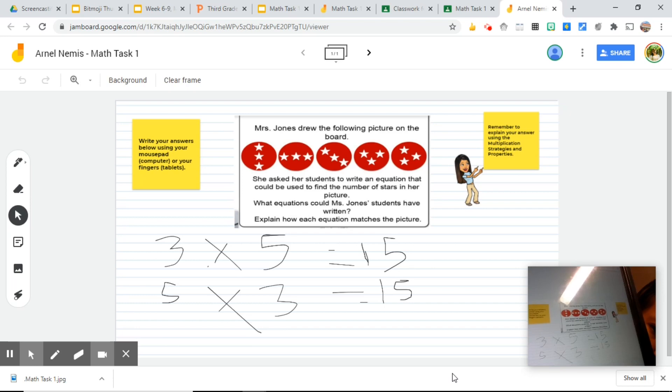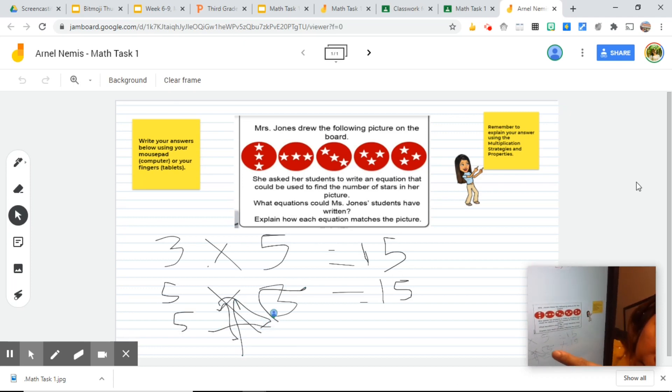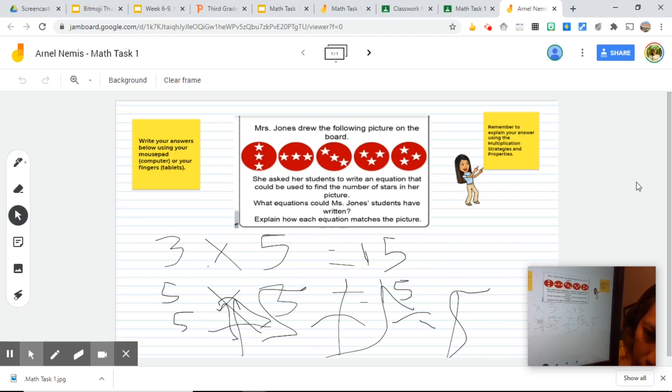As you can see, this is what we have wrote earlier because I'm using the same student account. So we can add. We can say 5 plus 5 plus 5 equals 15. And then once they are done, it automatically saves also in their Google Drive. And they cannot turn in their assignment on this platform since they're on Google Drive. So what they can do is go back to Google Classroom and click Submit.